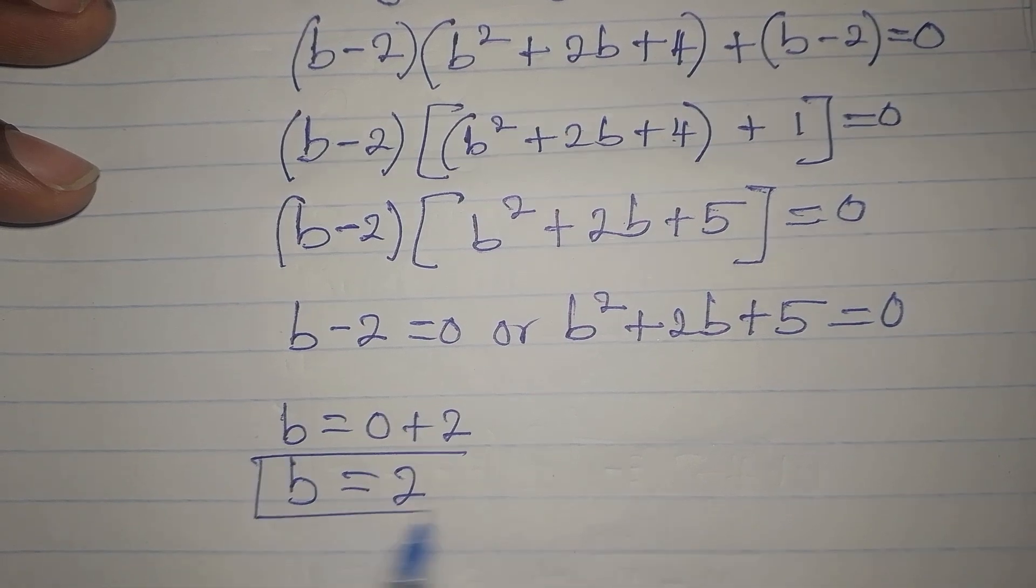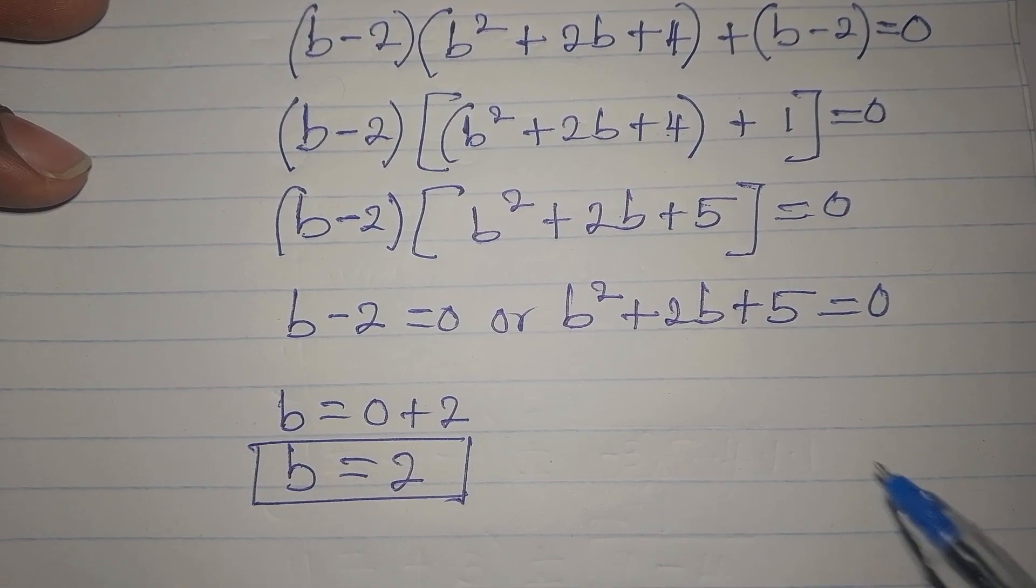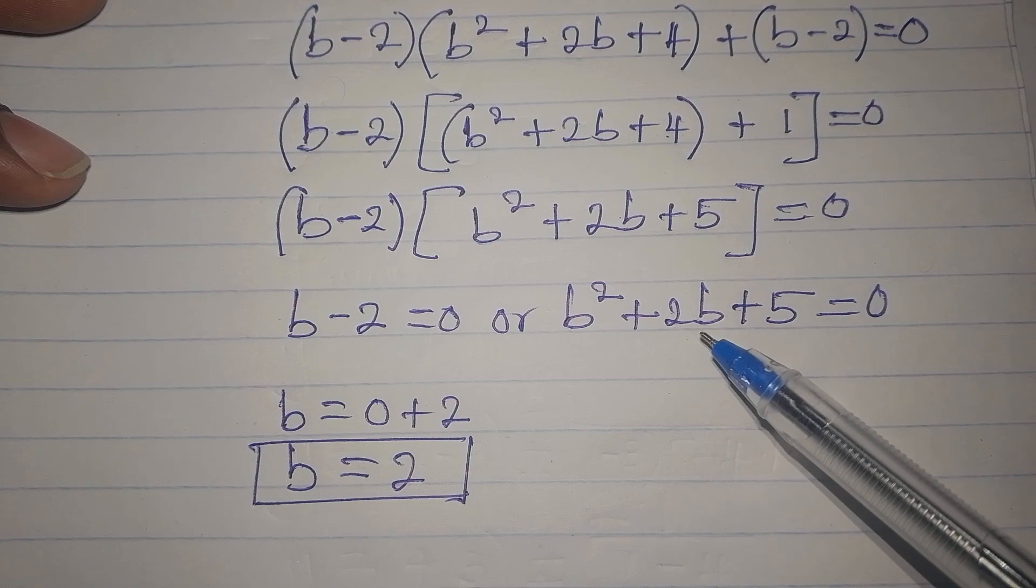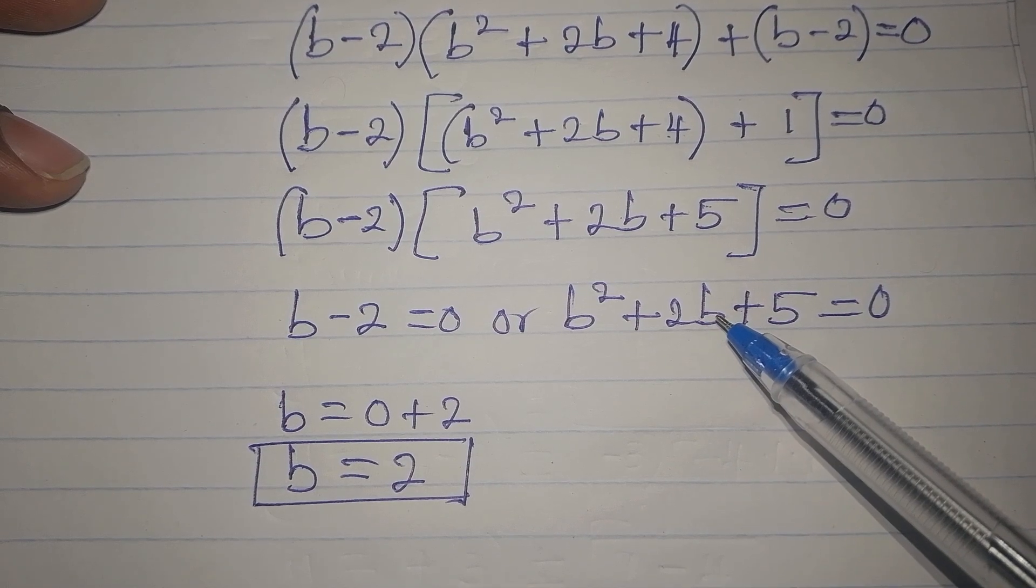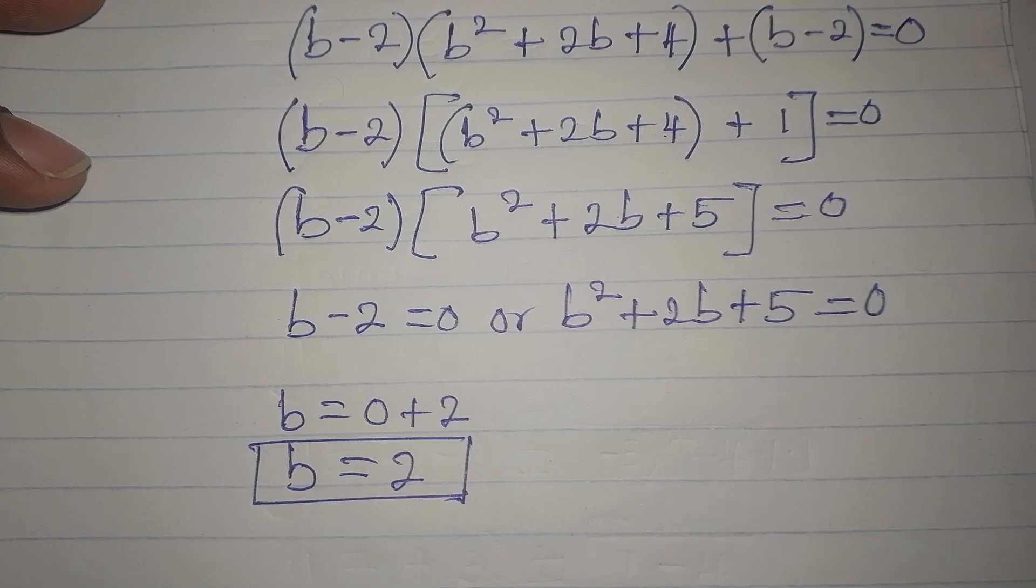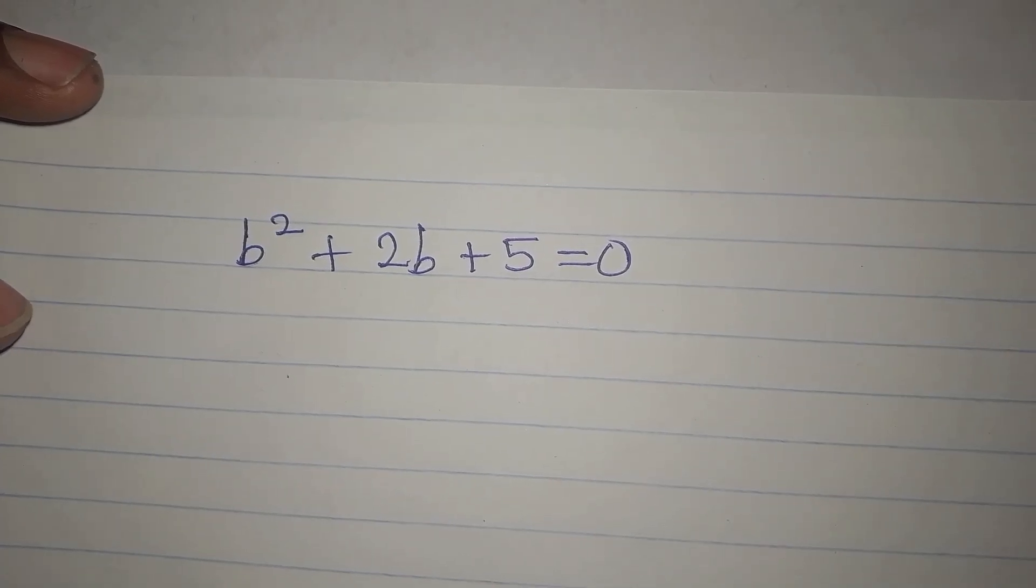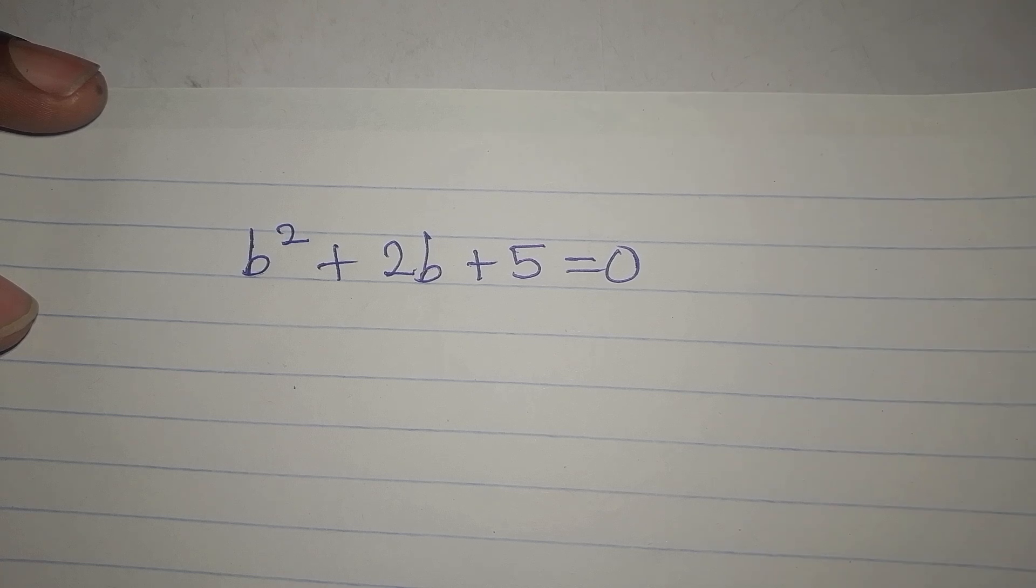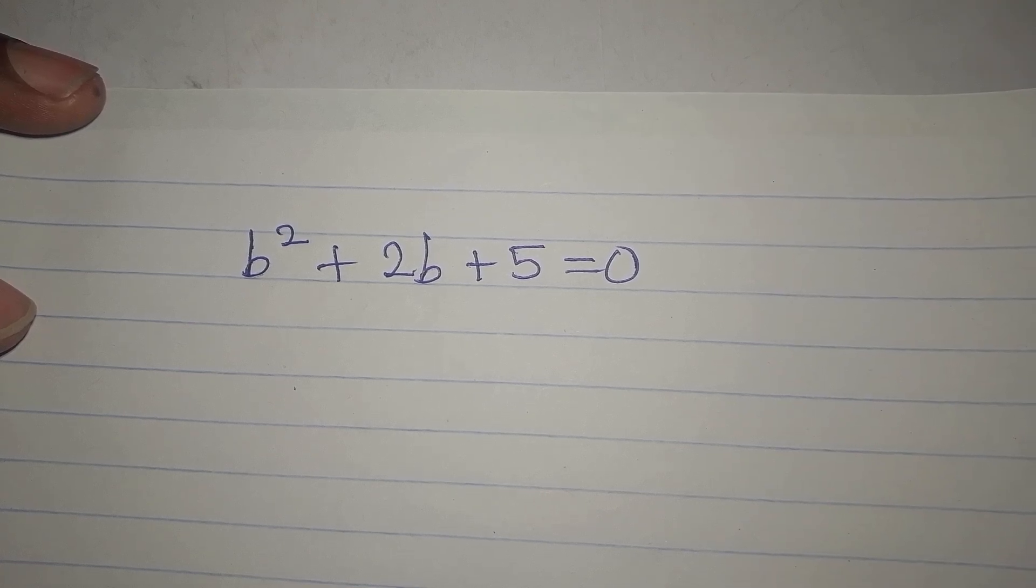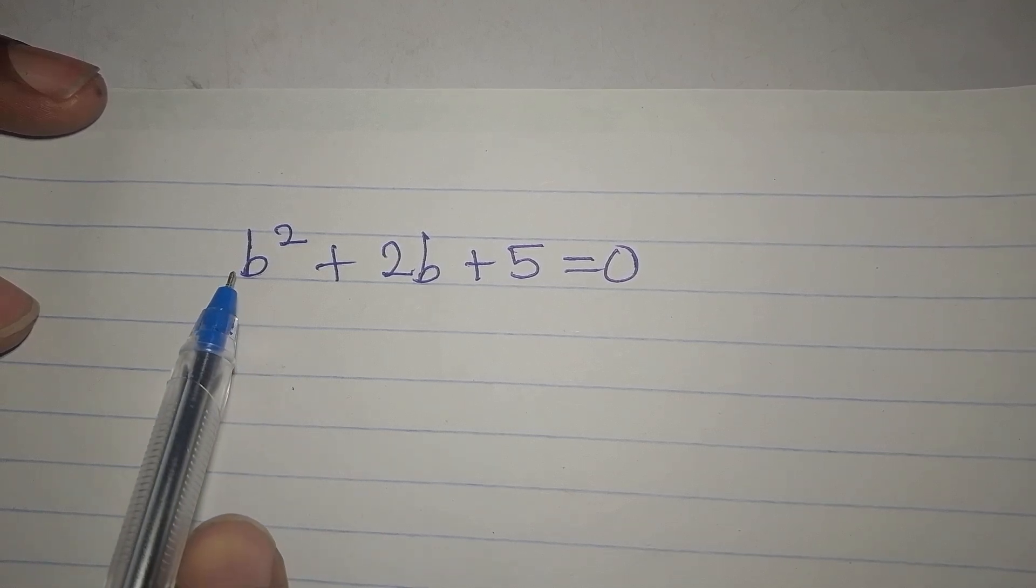Now we're going to get the other solutions from the quadratic equation. We have the quadratic equation and we normally use our formula: x = -b ± √(b² - 4ac) / 2a. There's going to be a b in the formula, so permit me to change this to x² + 2x + 5 = 0.